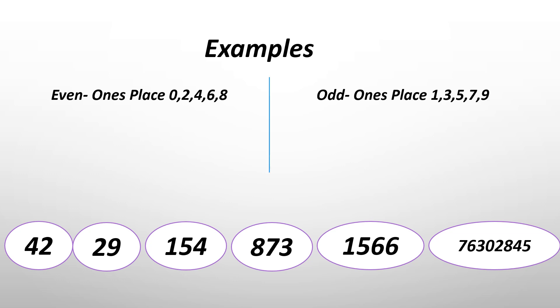And an odd number is if the ones place has a one, three, five, seven, or nine.